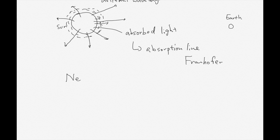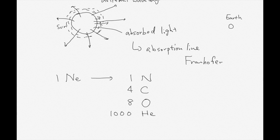For one single ion, we could find one nitrogen, four carbons, eight oxygens, 1000 helium, and 10,000 hydrogens. The main component of the Sun is hydrogen and helium.